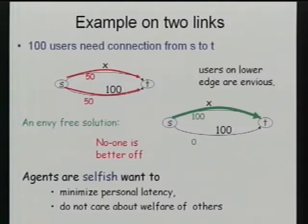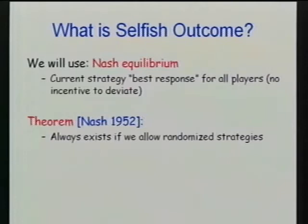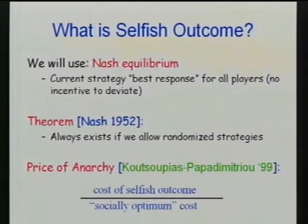I'll use the notion of Nash equilibrium: the current strategy is the best response for all players to the current state of affairs, and no one has incentive to change strategy. What's nice is that Nash equilibrium exists, as proven by Nash in 1952 — normally in randomized strategies, but in our game it will exist in pure strategies. What I'm mostly interested in is the price of anarchy, coined by Koutsoupias and Papadimitriou: the cost of the selfish outcome (the Nash equilibrium) compared to a socially optimal design.